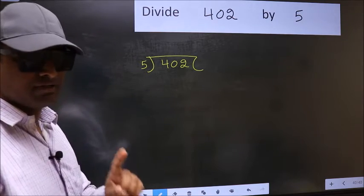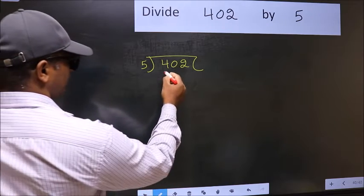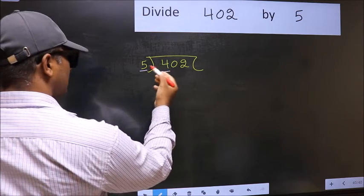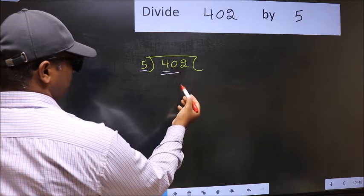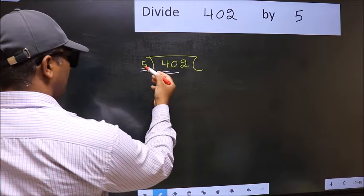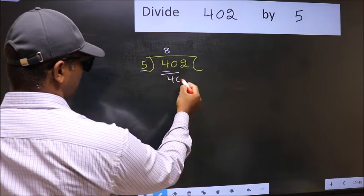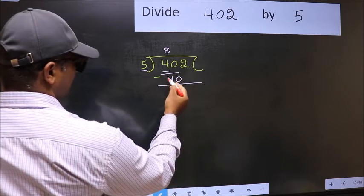This is your step 1. Next, here we have 4 and here 5. 4 is smaller than 5, so we should take two numbers: 40. When do we get 40 in 5 table? 5 eights 40. Now you should subtract 40 minus 40: 0.